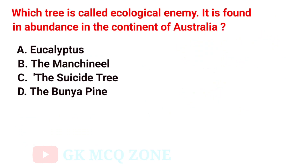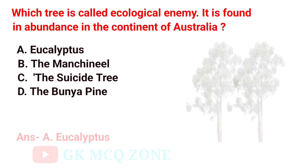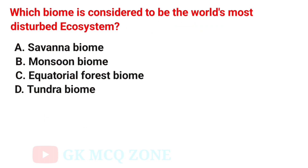Which tree is called the ecological enemy? It is found in abundance in the continent of Australia. The correct answer is Option A: Eucalyptus.